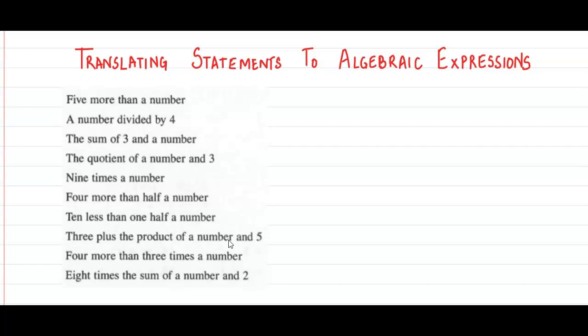The first one says 5 more than a number. So we have to make an expression which represents 5 more, 5 added to a number. Let's say the number is x. So the expression would be x plus 5.